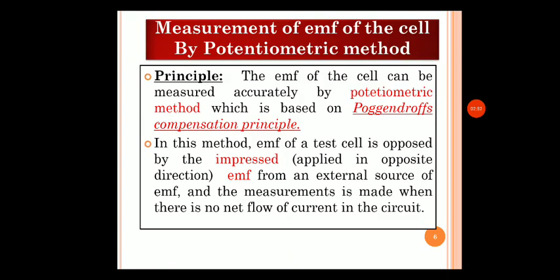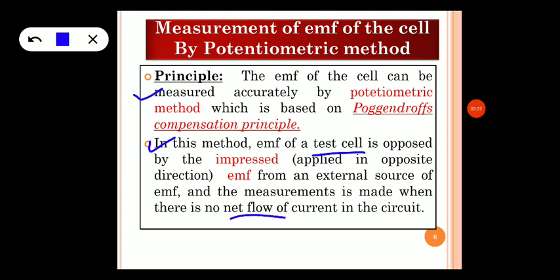Now let us understand how to measure the EMF of the cell by the potentiometric method. It is based on the principle that EMF of the cell can be measured accurately using Poggendorff's compensation principle. In this method, the test cell — the cell with unknown EMF — is opposed by an impressed EMF from an external battery, and the measurement is made when there is no net flow of current in the circuit, that is, at the null point.